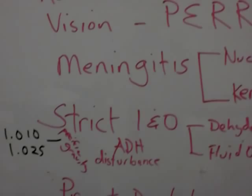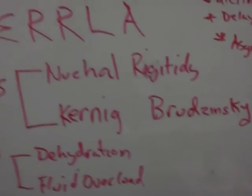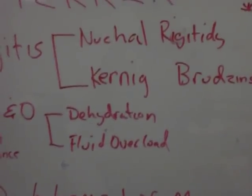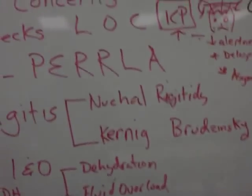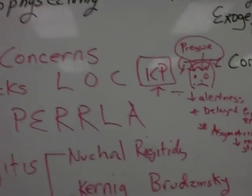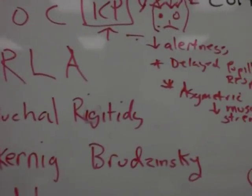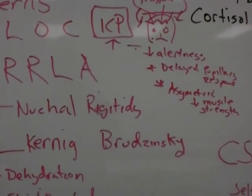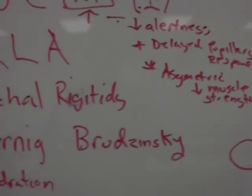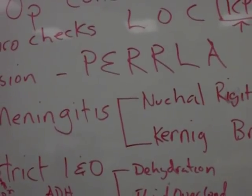Meningitis is a big concern with this surgery. Anytime you penetrate the meninges, you have risk of meningitis. Signs and symptoms include nuchal rigidity — a stiff neck. The classic signs of meningeal irritation are Kernig's and Brudzinski's signs. Kernig's sign is when you flex the hip and try to extend the lower leg and the patient incurs leg pain. Brudzinski's sign is when you tilt the head forward onto the chest and both hips flex. The patient may also have photosensitivity — sensitivity to light — and headache.